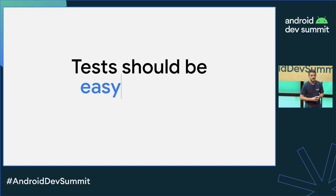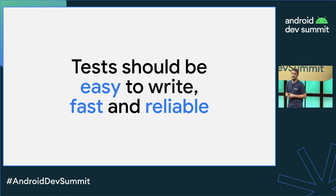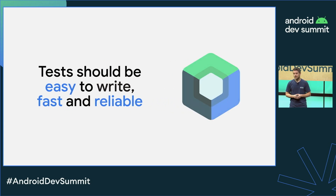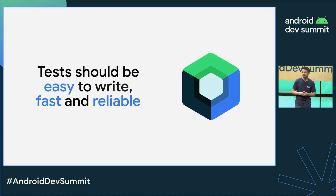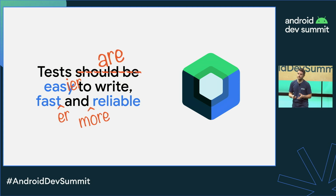Hello, everyone. My name is Jose Alcerreca. I'm an engineer on the developer relations team. In this talk, I'm going to walk you through five ways Compose has changed how we test UIs. Tests should be easy to write, they should run quickly, and they should be reliable. Compose was designed with testability in mind, and while not completely there, it has improved the testing experience enormously.